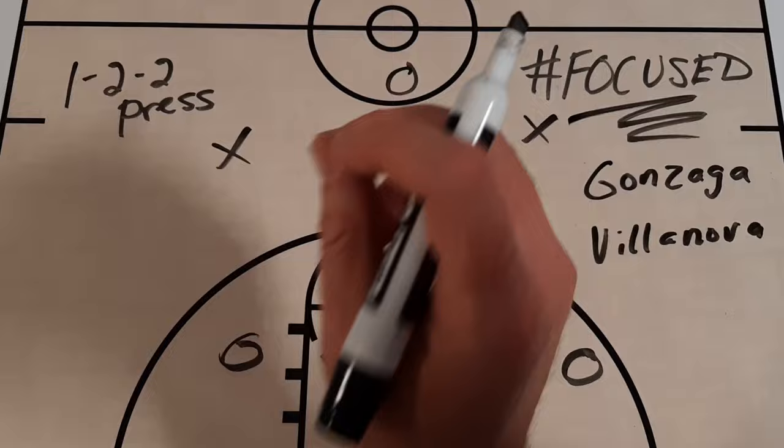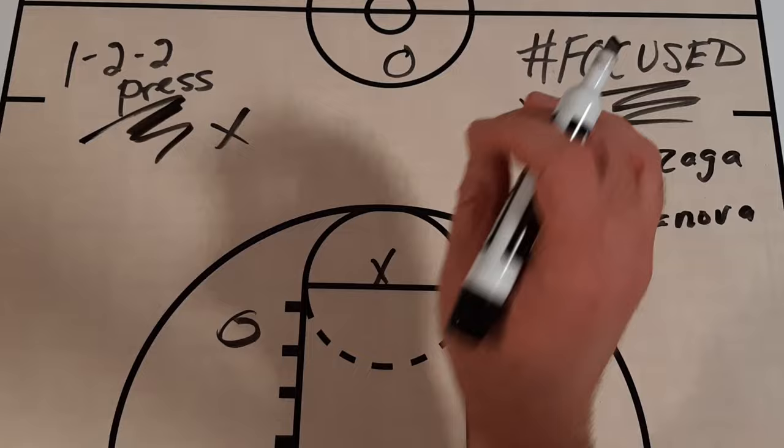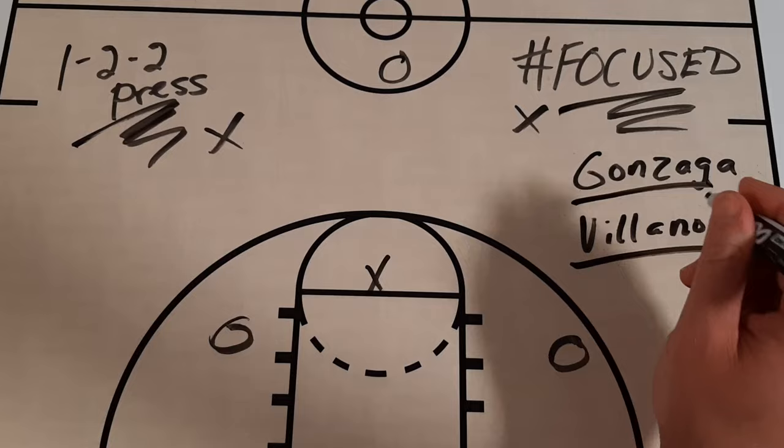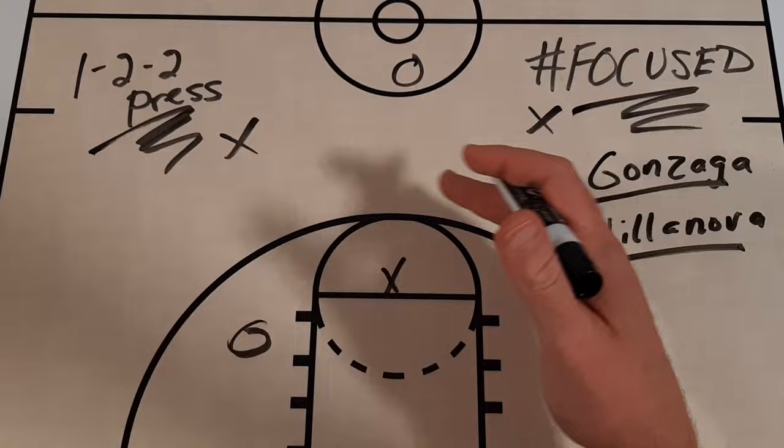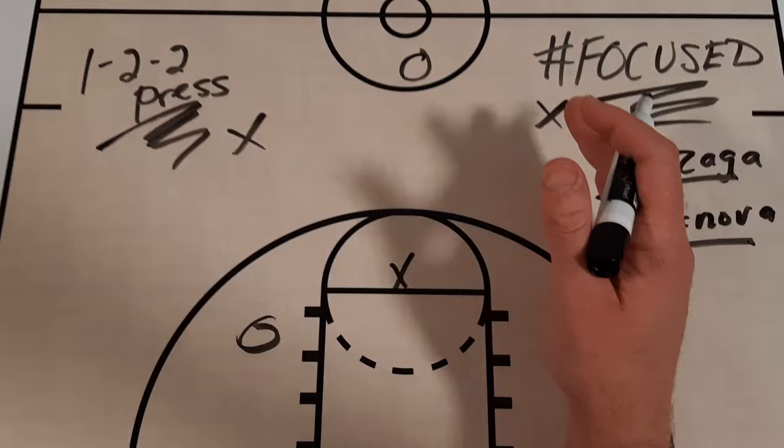This is especially popular at the college level where teams like Gonzaga and Villanova, when Jay Wright was there, used this press. Today I'm going to show you both the Zags and Villanova using this press and how they used it to benefit their team. Duke also would use this from time to time with Mike Krzyzewski, and a lot of other teams used it as well.